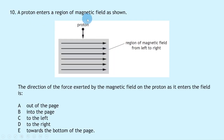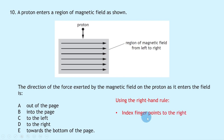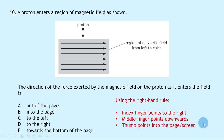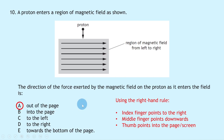Question 10: A proton enters a magnetic field pointing left to right, moving downwards into the field. Using the right-hand rule: index finger points right (field direction), middle finger points downward (proton direction), giving the thumb pointing into the page. However, the right-hand rule applies to negatively charged particles. Since a proton is positively charged, we reverse the direction — the force is out of the page.